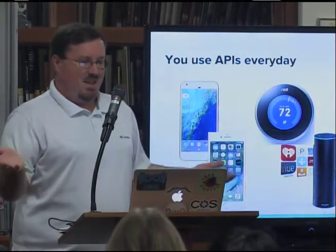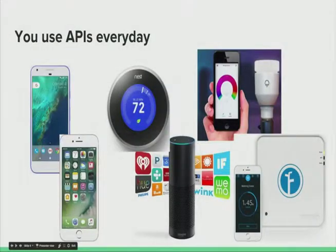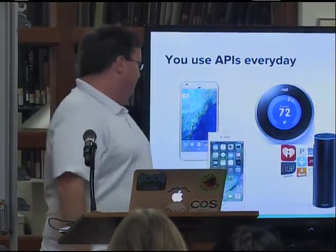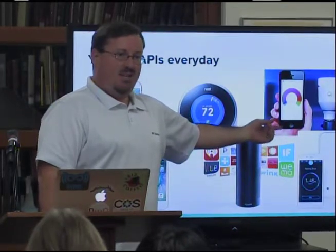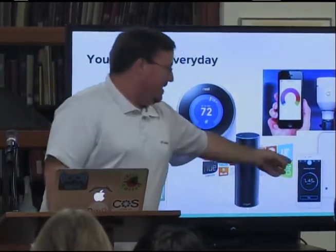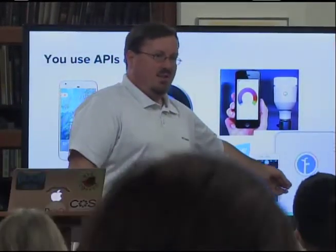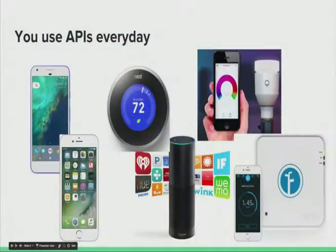Has anybody used a cell phone today? Does anybody have a Nest or Ecobee at home? An Alexa or Echo? These are all using APIs. I also bought a Rachio — an integrated irrigation controller that uses APIs to contact an application on your cell phone, so you can control it wherever you are as long as you have a network connection.